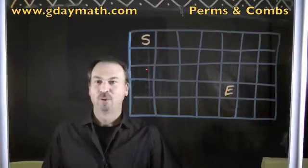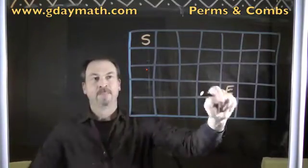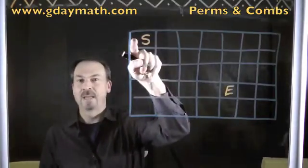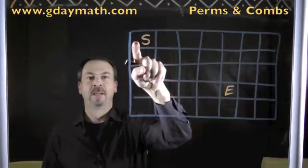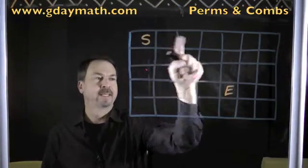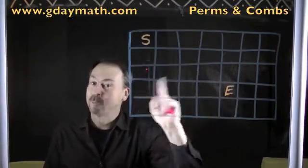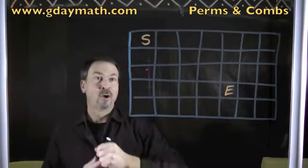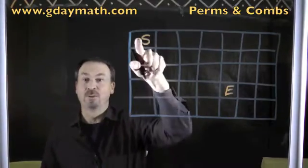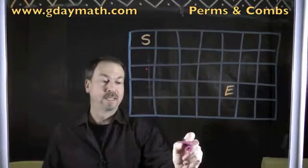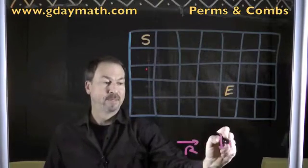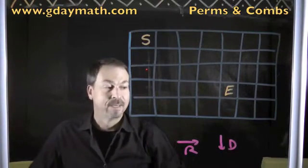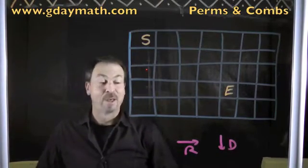G'day! Here's a puzzle — a grid walking puzzle. It goes as follows. Here's a grid of squares, here's the starting cell, and here's the ending cell. My question is: how many ways can I walk from cell to cell, starting at S and ending in E? But there's a restriction. The steps I can make can only be horizontal steps to the right or vertical downward steps. R's for rights and D's for downs — they're the only moves you can do.